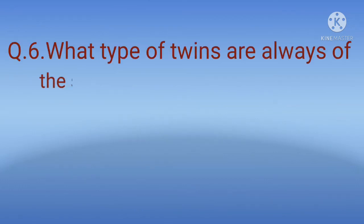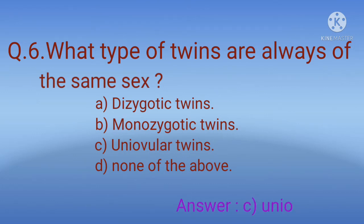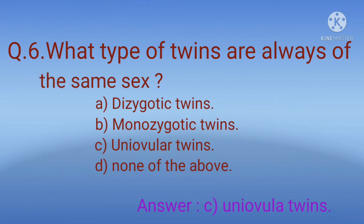Question 6: What type of twins are always of the same sex? Options: A) Dizygotic twins, B) Monozygotic twins, C) Unipolar twins, D) None of the above. The correct option is C, unipolar twins.